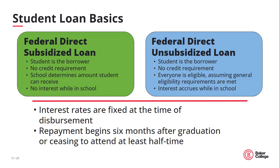Subsidized loans are interest-free while the student is in school. Federal Direct Unsubsidized Loans, on the other hand, are not dependent on need, and they accrue interest while the student is in school. While it's not required that the interest be paid, we do recommend paying the interest while in school, if you're able to, to keep your debt as minimal as possible. The interest rates on these loans are fixed each year and change yearly based on the Treasury bill. The interest rate for the 23-24 academic year is set at 5.5 percent.